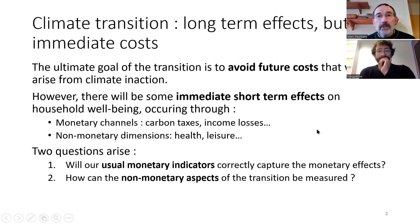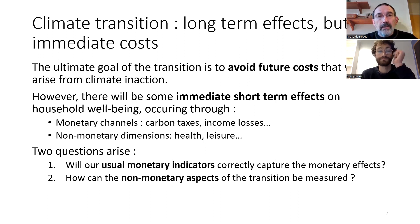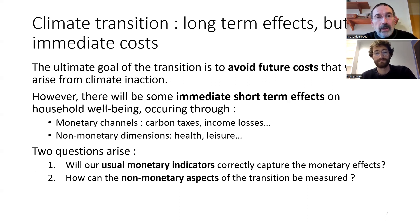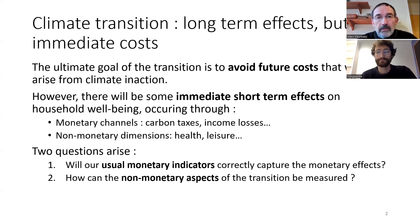The climate transition will have long-term effects but also immediate costs that must be borne by the population. The ultimate goal of the transition is to avoid the future costs that would arise from climate inaction, namely the climate change impacts. However, there will be some immediate short-term effects on household well-being occurring through monetary channels — mostly costs: carbon taxes, income losses, subsidies — but also non-monetary dimensions, sometimes benefits in the domains of health or leisure, for instance.